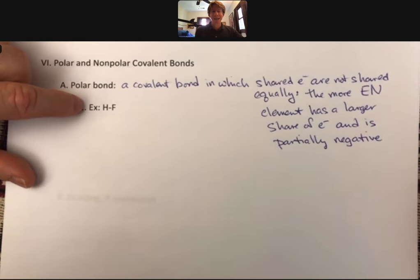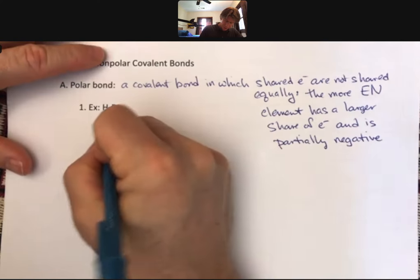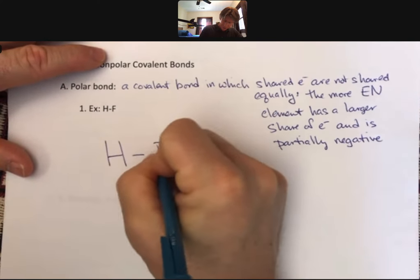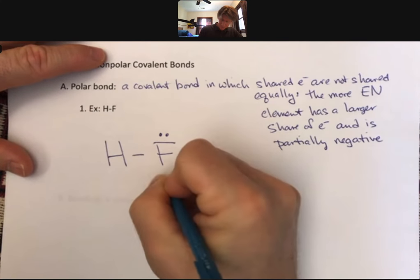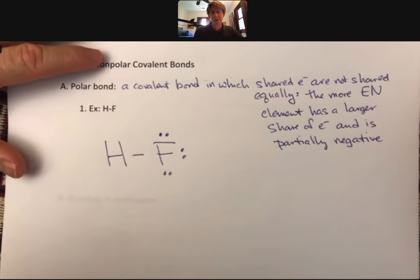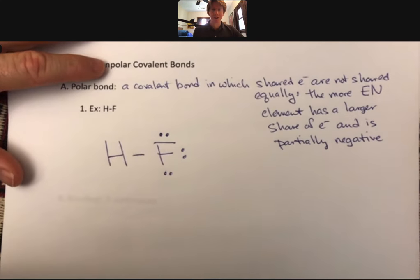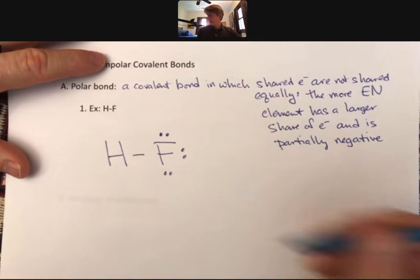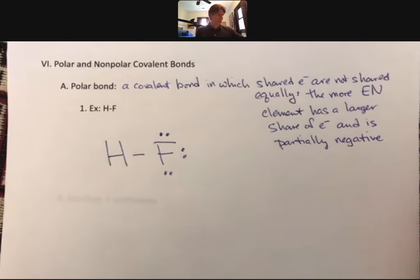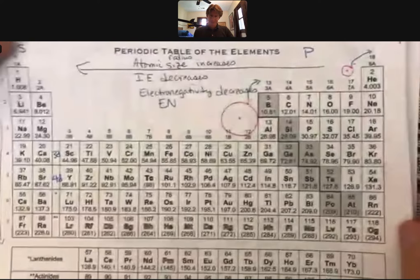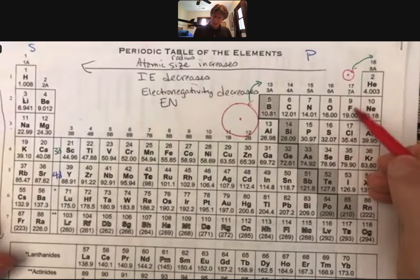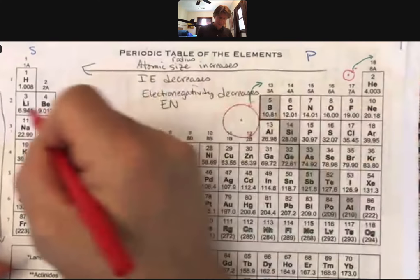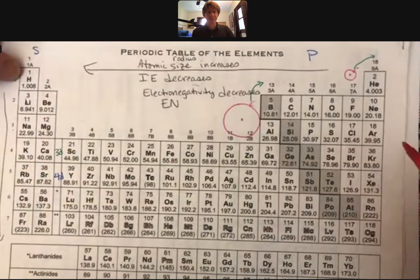My example here is HF. HF is the most polar covalent bond. If I were to draw its Lewis structure, and everything comes down to Lewis structures now, you have to be able to draw the Lewis structure for the next couple chapters at least. Here's the Lewis structure, and if we look at our periodic table, here's fluorine, and electronegativity decreases as you go left and down. Hydrogen's up here.